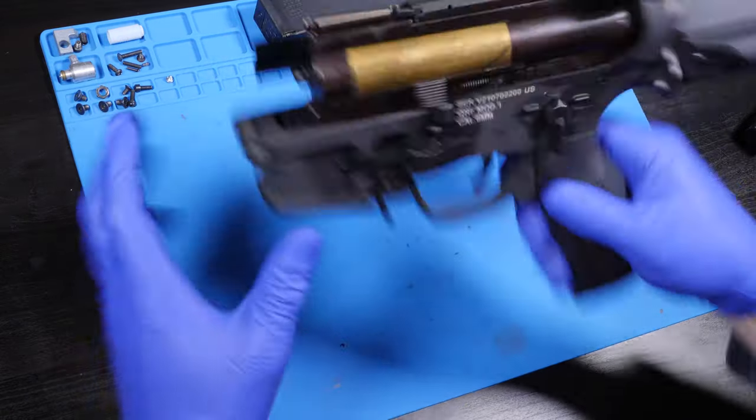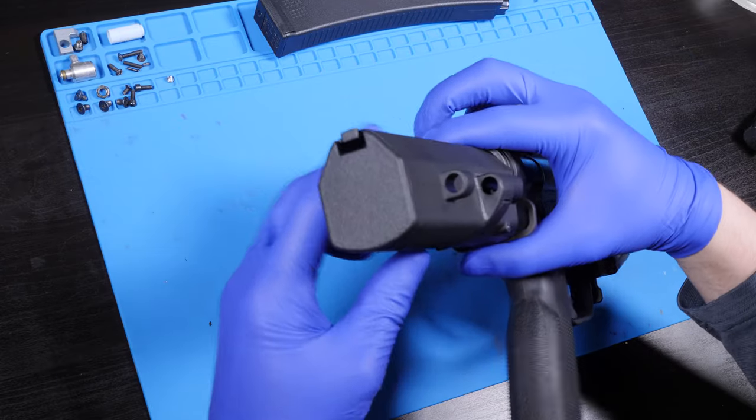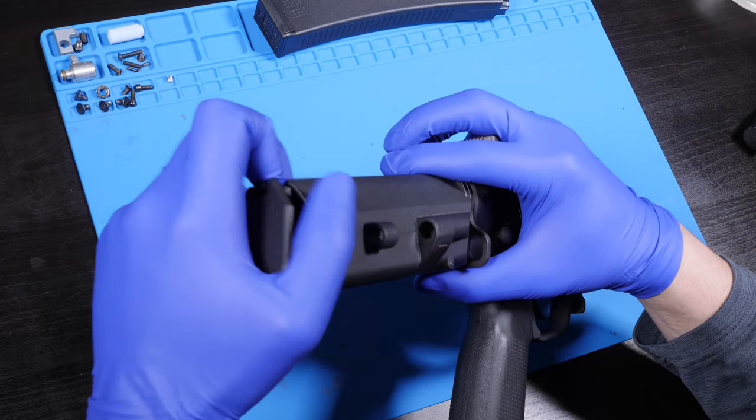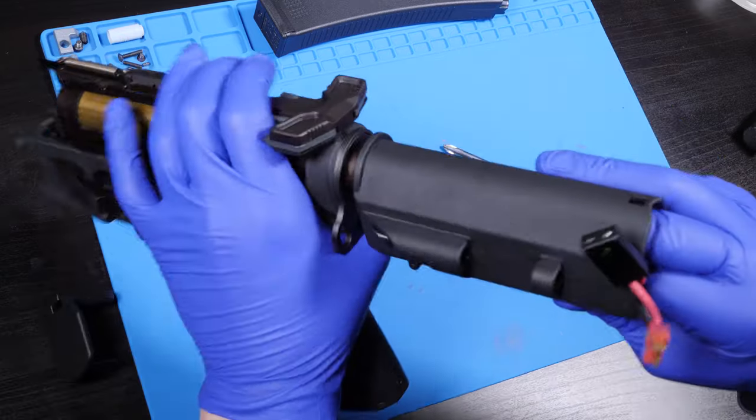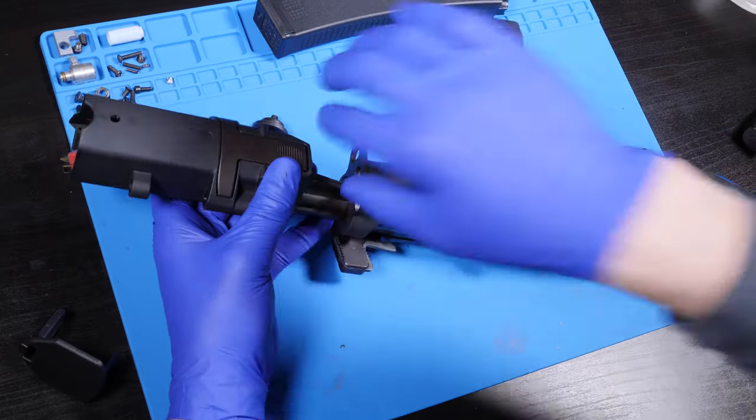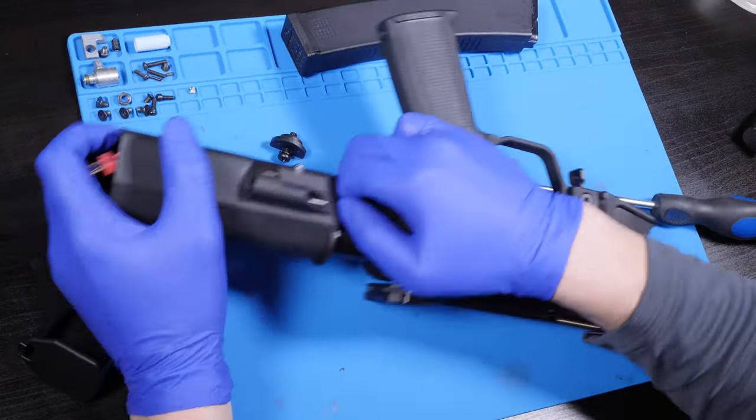I'm gonna remove the stock and take off the buffer tube end cap, and there lies our buffer tube screw. Removing the screw at the base of the buffer tube is gonna allow the buffer tube assembly to slide off.